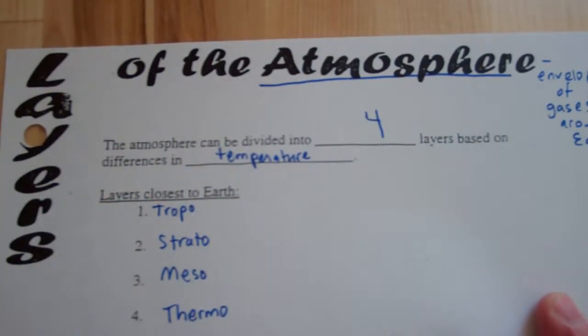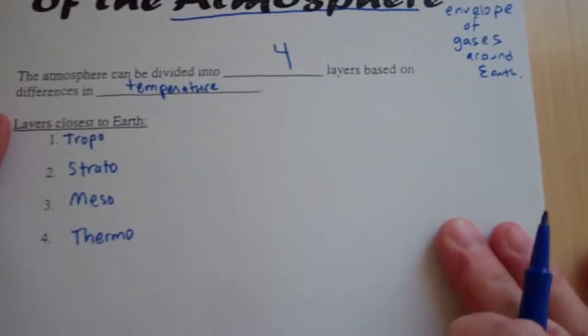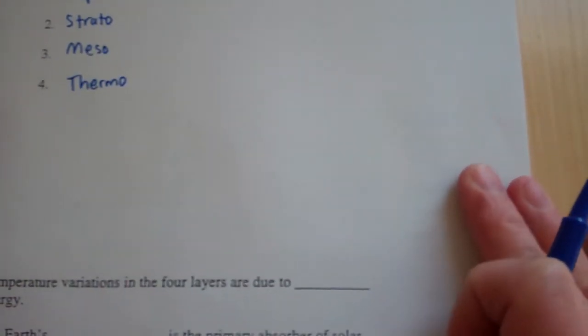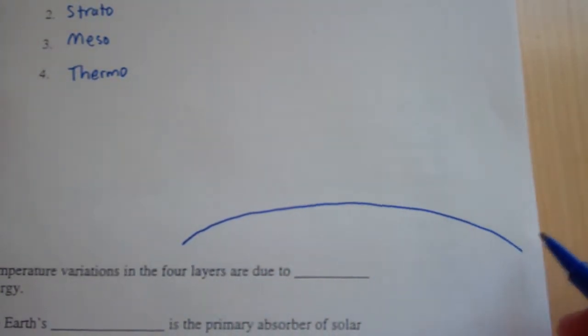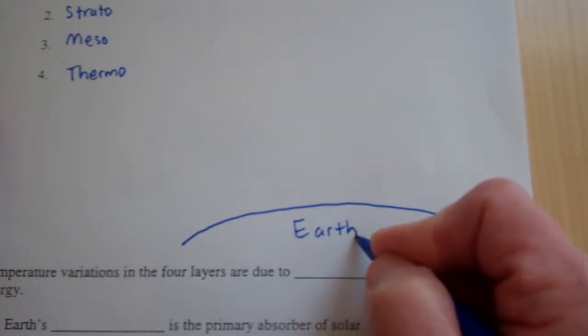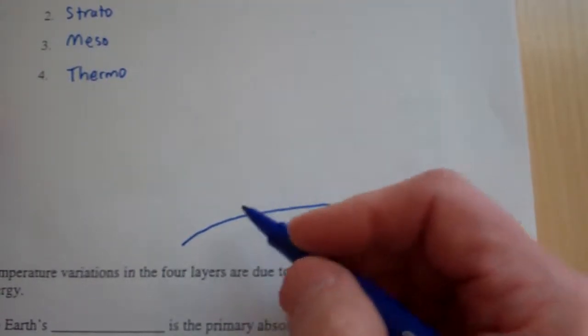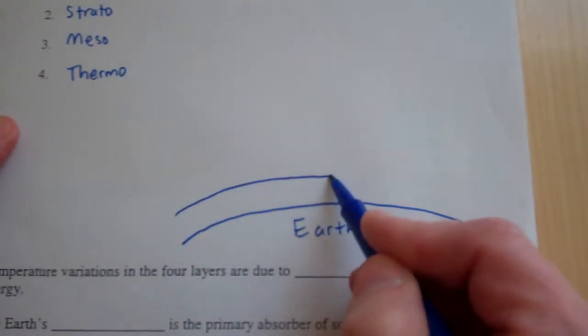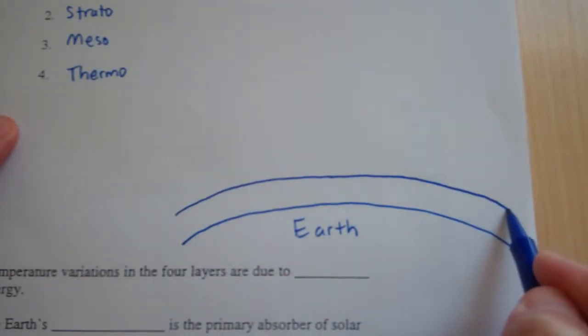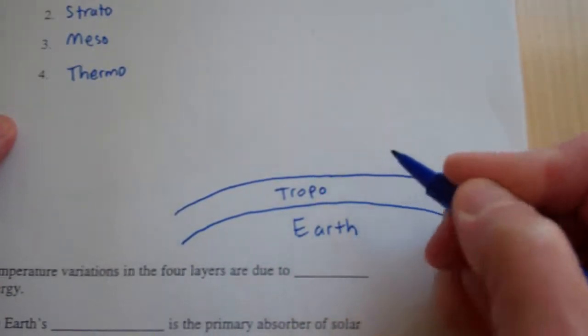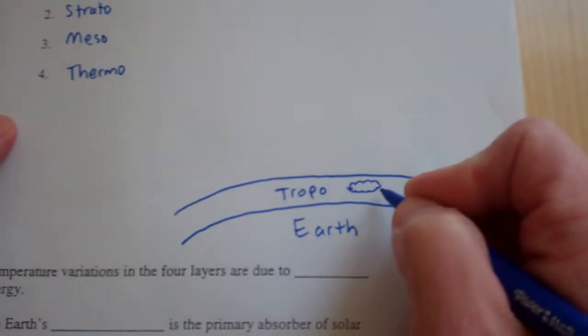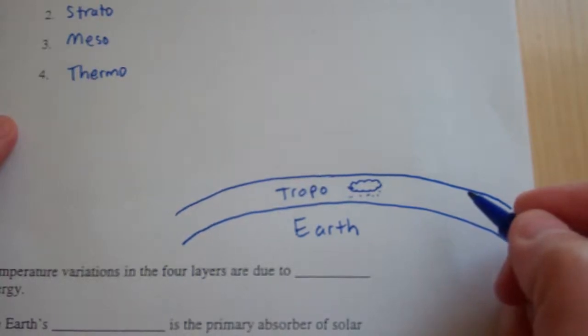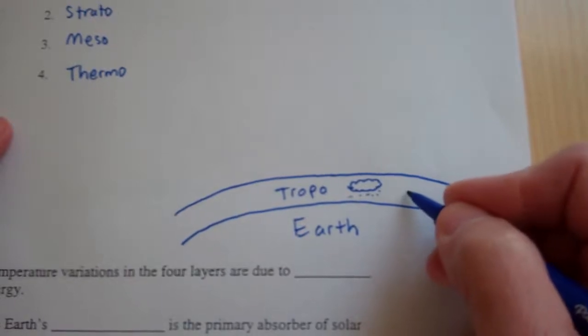Now, what we did next in our notes was we drew a picture, and we're going to use up a lot of this space here. So I'm going to draw, this is the earth's surface right here. And let's draw the troposphere. So this first layer we're going to call tropo. And this is where most of our weather occurs. So we're going to draw a cloud and some rain. So this is your layer. This is where we live.